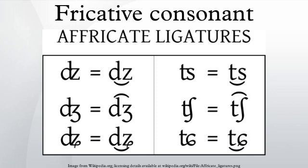This turbulent airflow is called frication. A particular subset of fricatives are the sibilants. When forming a sibilant, one still is forcing air through a narrow channel, but in addition, the tongue is curled lengthwise to direct the air over the edge of the teeth.